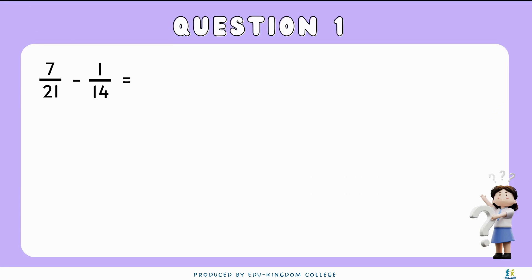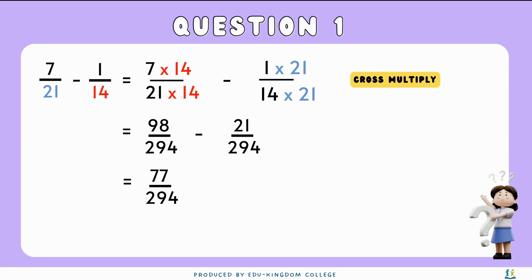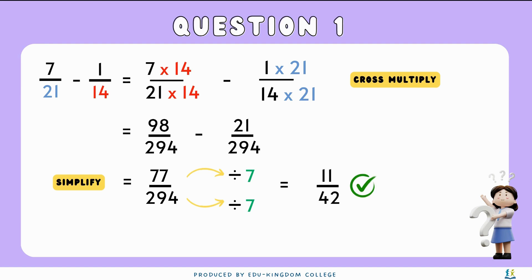Now you should try some questions. Please pause the video and try this question. Question one: seven over twenty-one minus one over fourteen. First we cross-multiply: seven times fourteen over twenty-one times fourteen, minus one times twenty-one over fourteen times twenty-one, which gives us ninety-eight over two hundred and ninety-four, minus twenty-one over two hundred and ninety-four. Subtracting the numerators gives seventy-seven over two hundred and ninety-four. Simplifying by dividing by seven gives us eleven over forty-two.